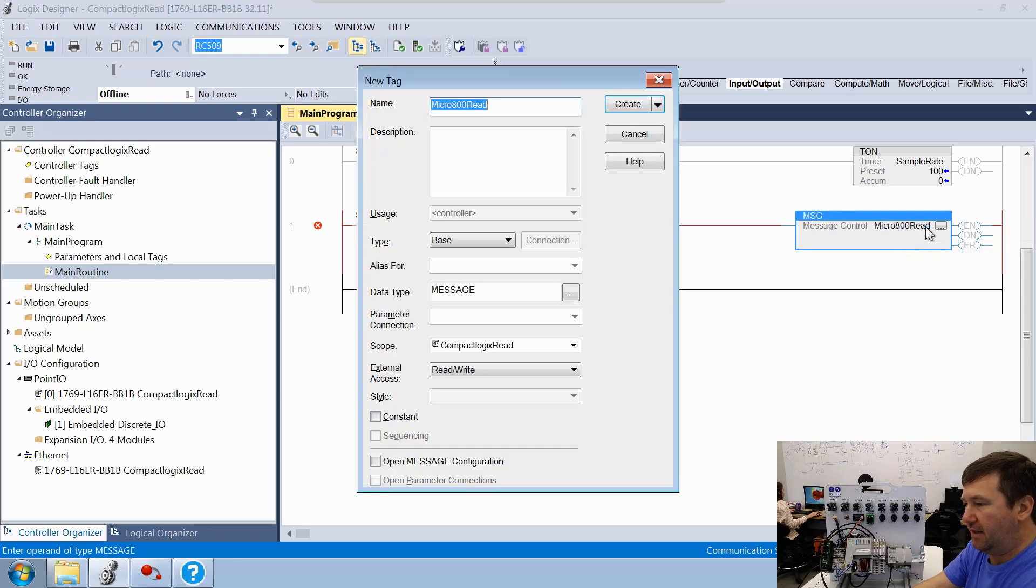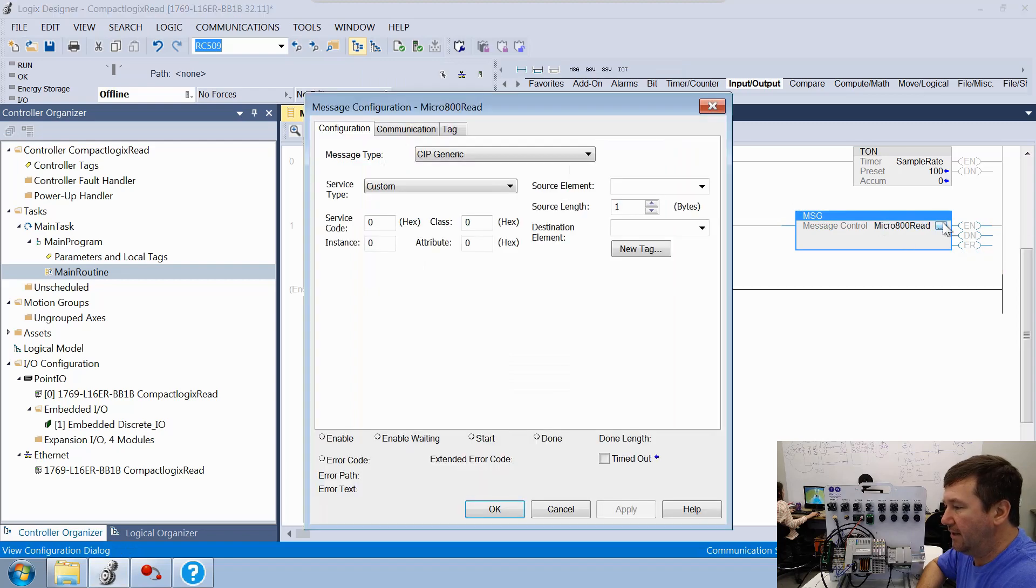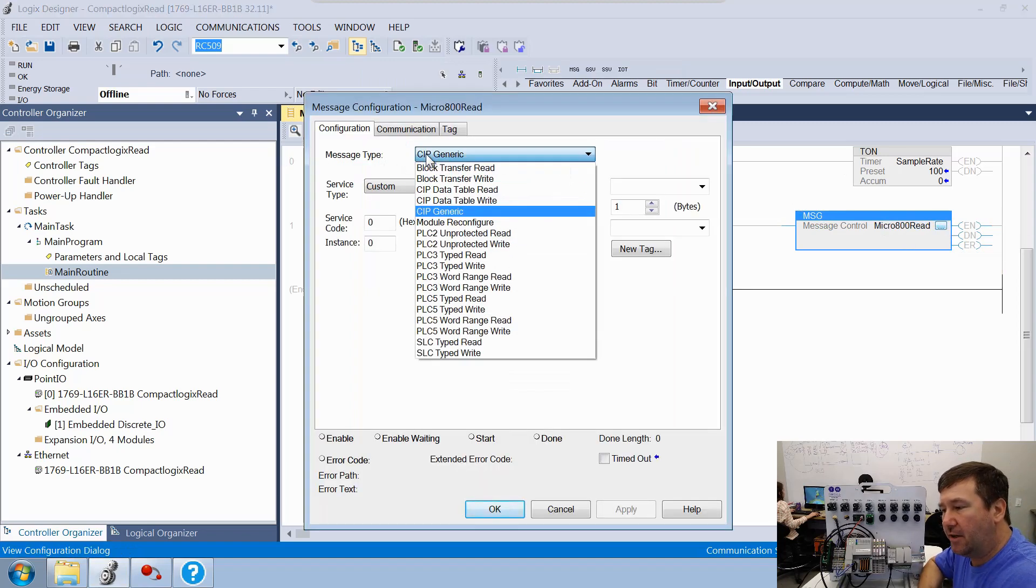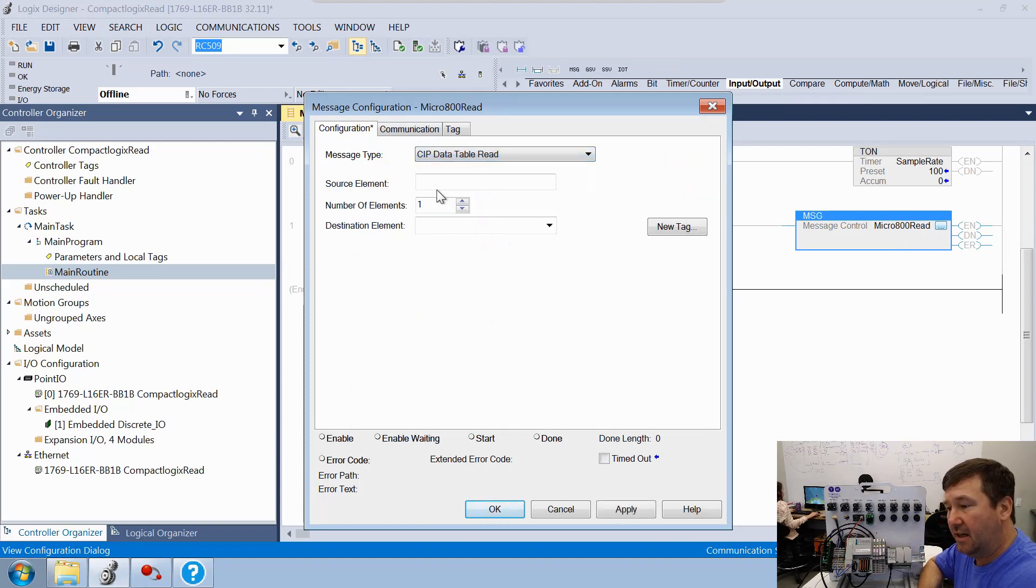We're going to go ahead and just give it a tag of micro 800 read. We'll create that as a data type of message. And then we'll open it up. For the message type, we are going to use a CIP data table read.